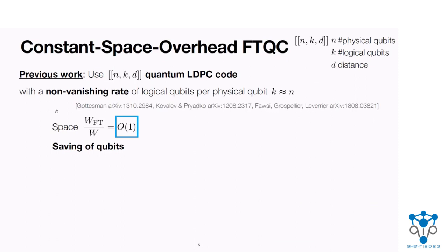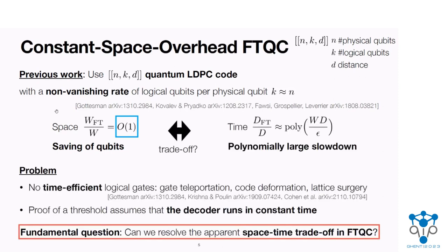A more recent fault-tolerant protocol addresses this obstacle by proposing to use quantum LDPC codes with a non-vanishing rate of logical qubits per physical qubit. With this class of quantum LDPC codes, the space overhead can indeed be bounded by a constant, achieving significant savings of qubits compared to polylogarithmically growing overhead. However, the time overhead of existing protocols for constant space overhead FTQC grows polynomially, and thus potentially cancels out part of the useful polynomial speedup of quantum computation.